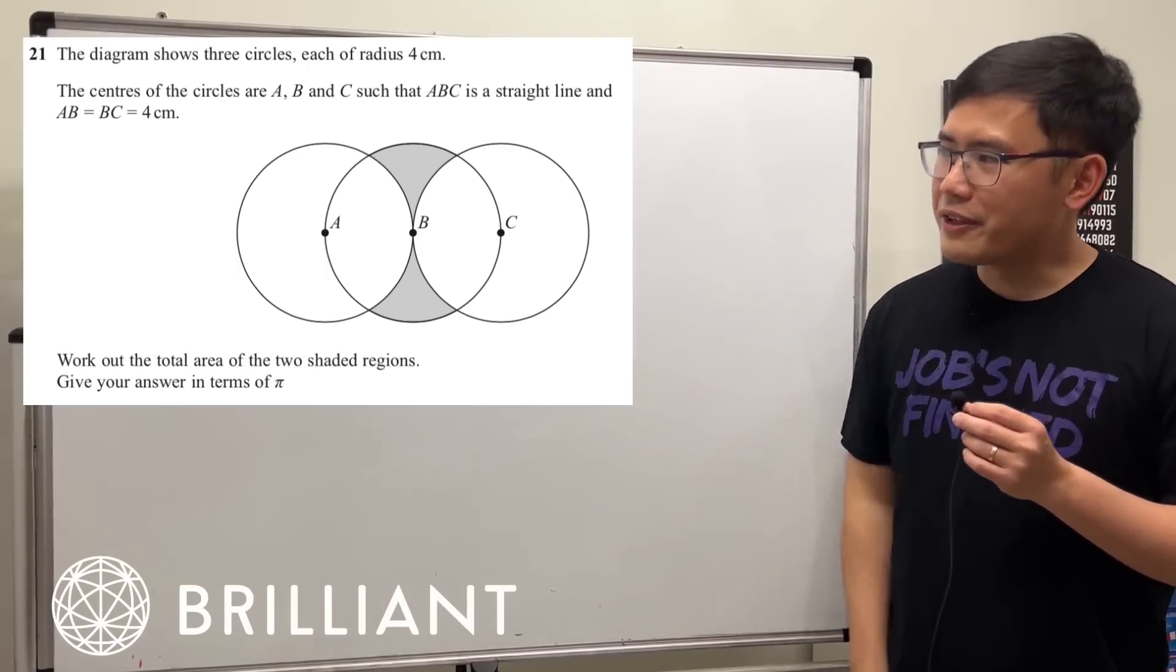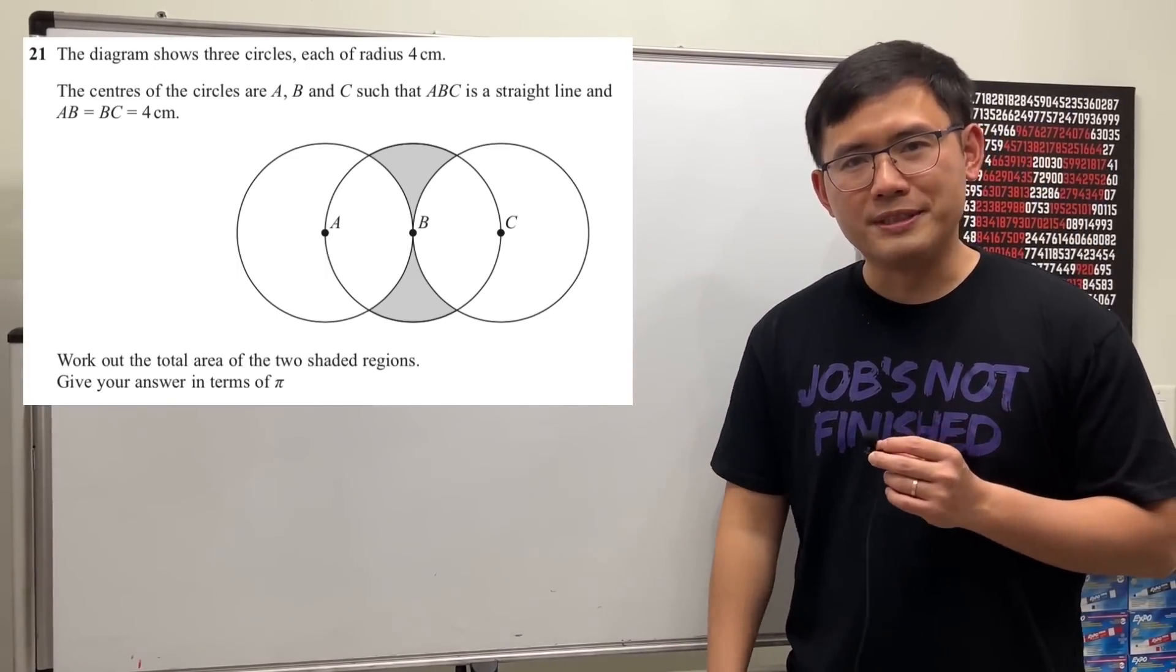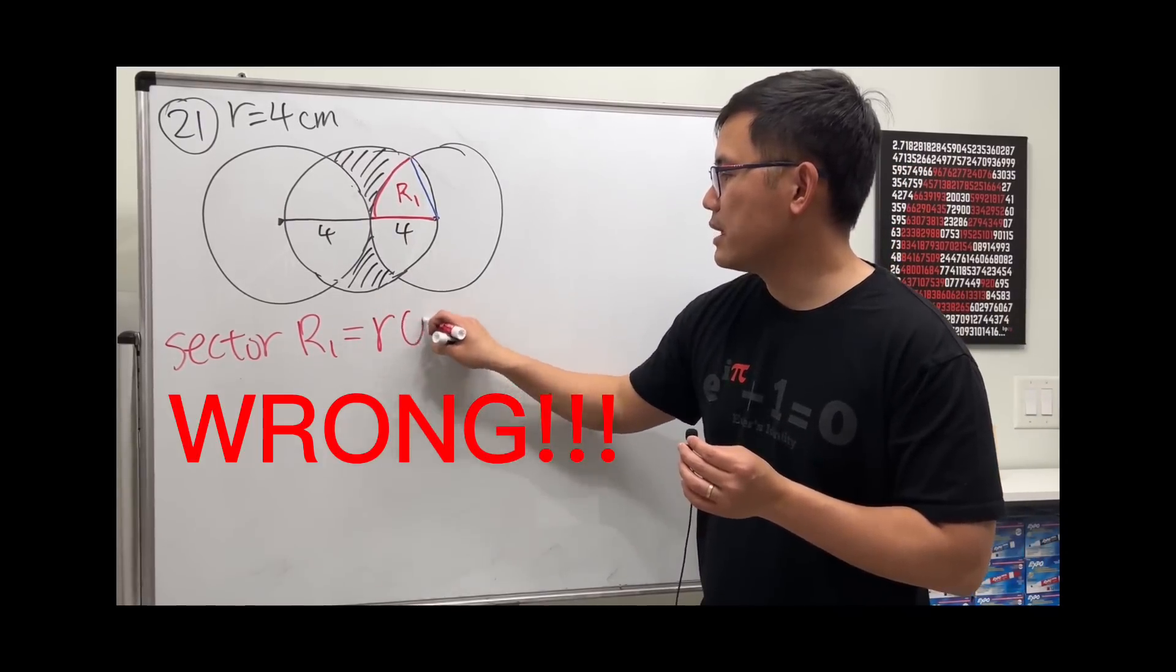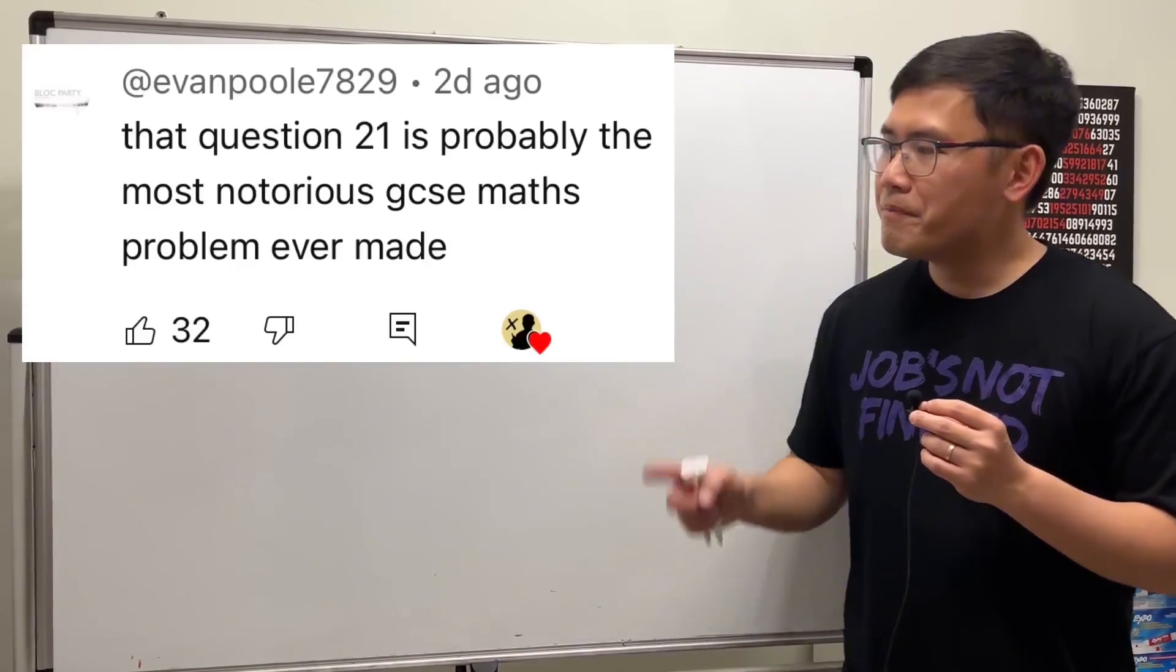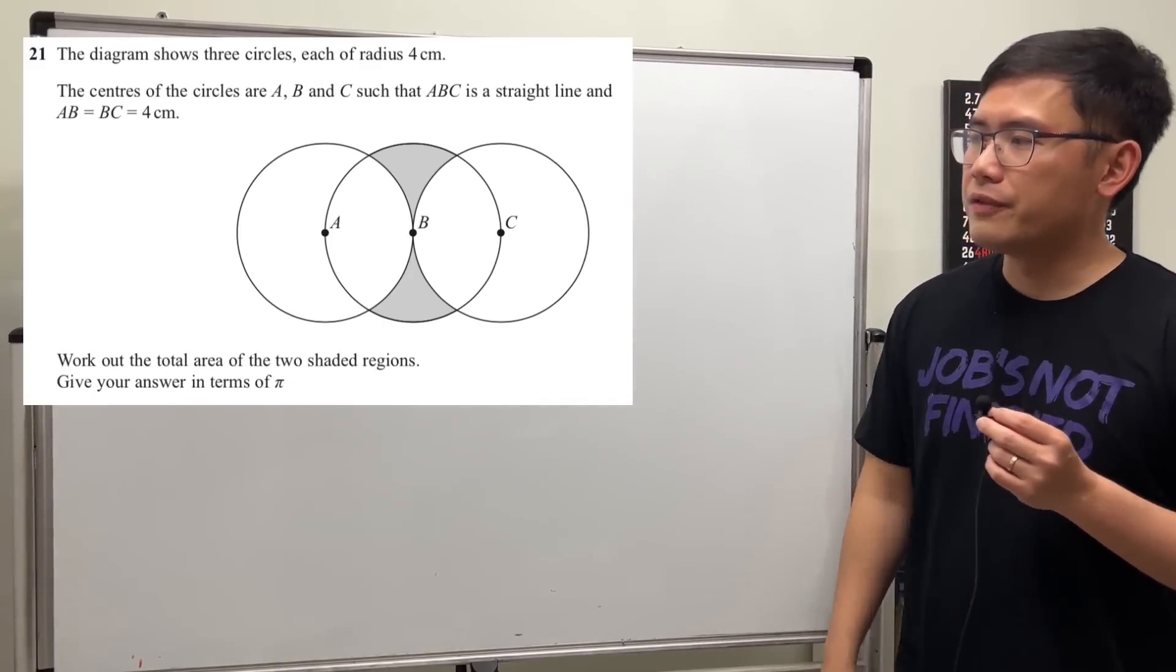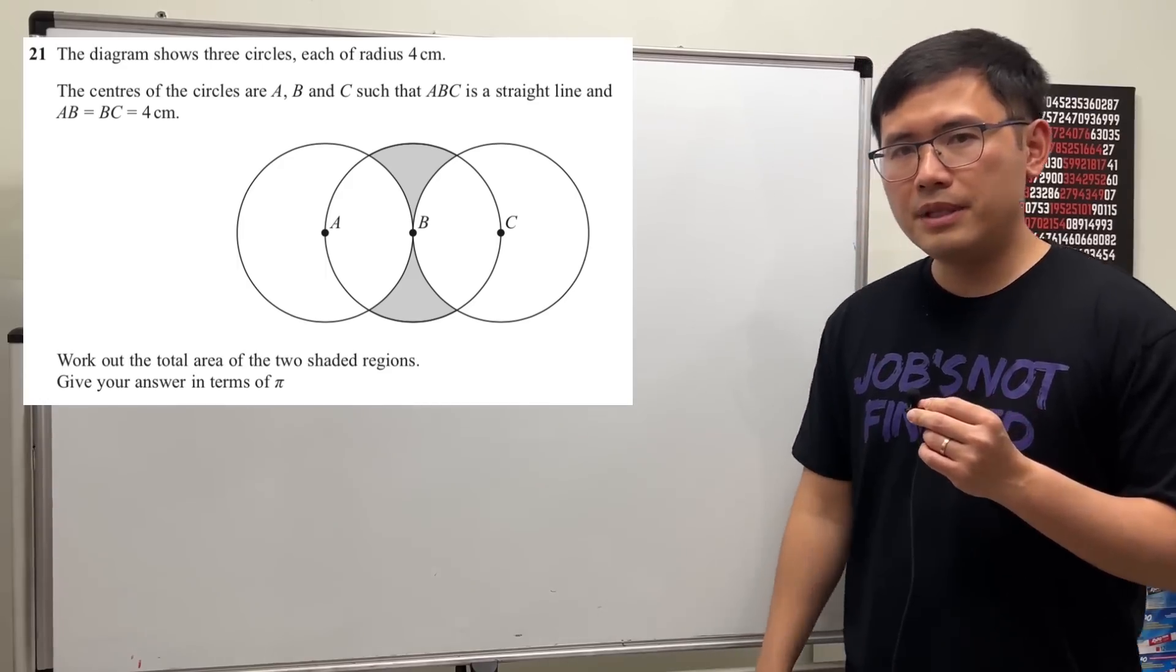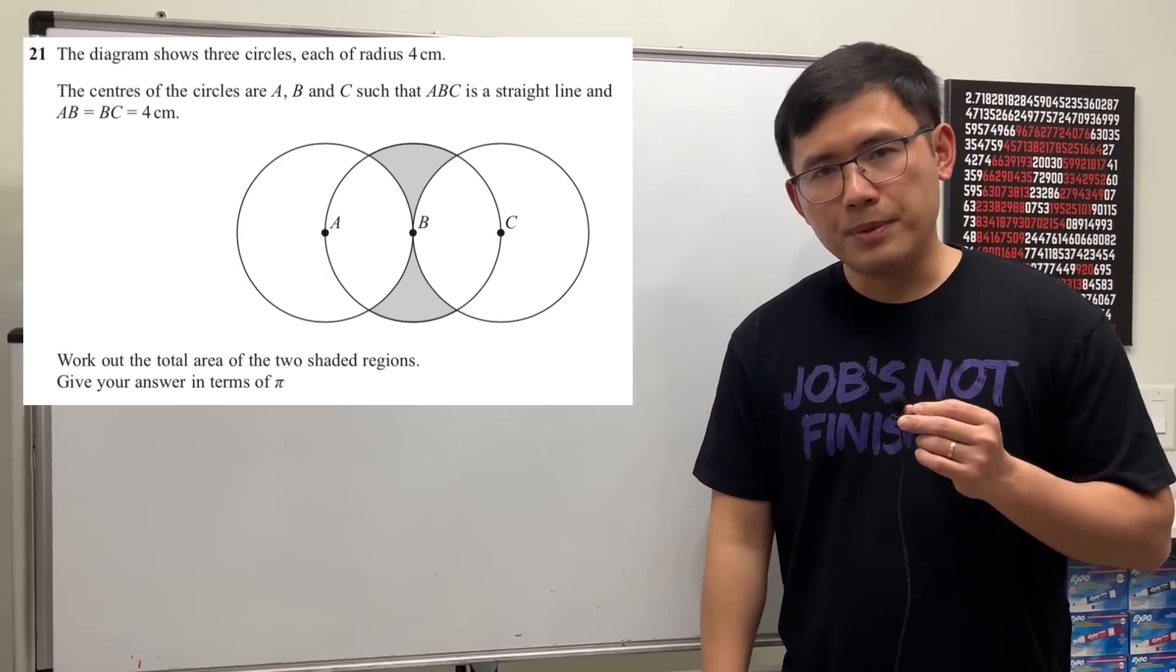Today I'm going to redo this question right here because when I was doing this for the first time, I made a horrible mistake. The formula for that is just radius times theta, so I'm going to redo it. For the people who don't know, this is the notorious GCSE math question from the year of 2022. It's the last question of the GCSE math paper, worth 5 marks, and let me tell you, this one even made the news. A lot of people didn't like it.